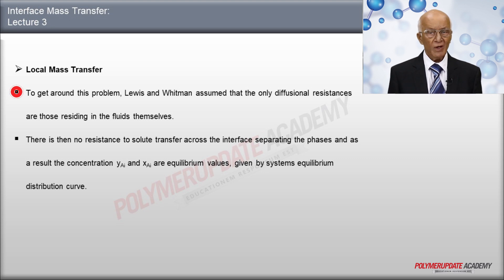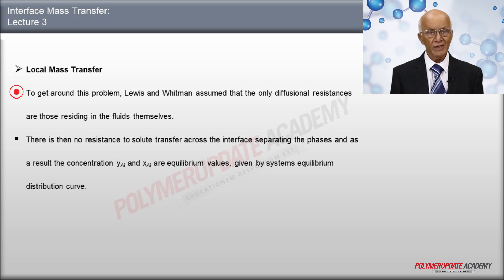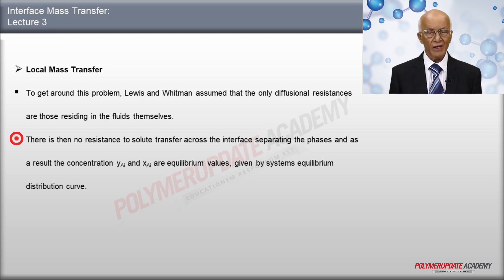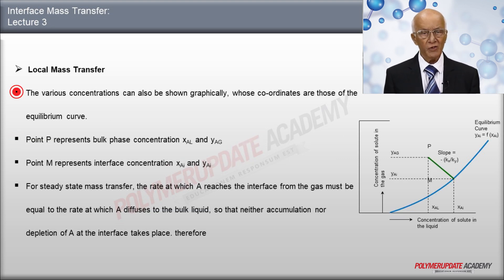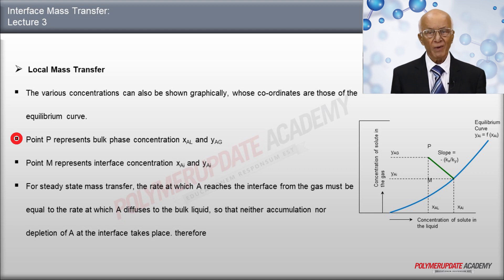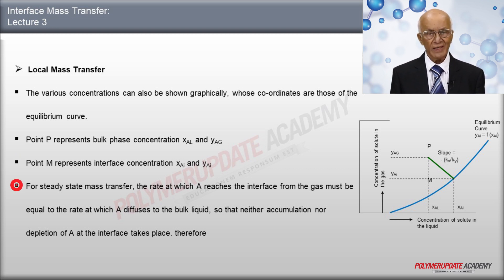To get around this problem, Lewis and Whitman assume that the only diffusional resistances are those residing in the fluid phases themselves. There is then no resistance to solute transfer across the interface separating the phases, and as a result concentrations Yai and Xai are equilibrium values given by the system's equilibrium distribution curve. The various concentrations can also be shown graphically: point P represents the bulk phase concentrations Xal and Yag, while point M represents the interface concentrations Xai and Yai for steady-state mass transfer.